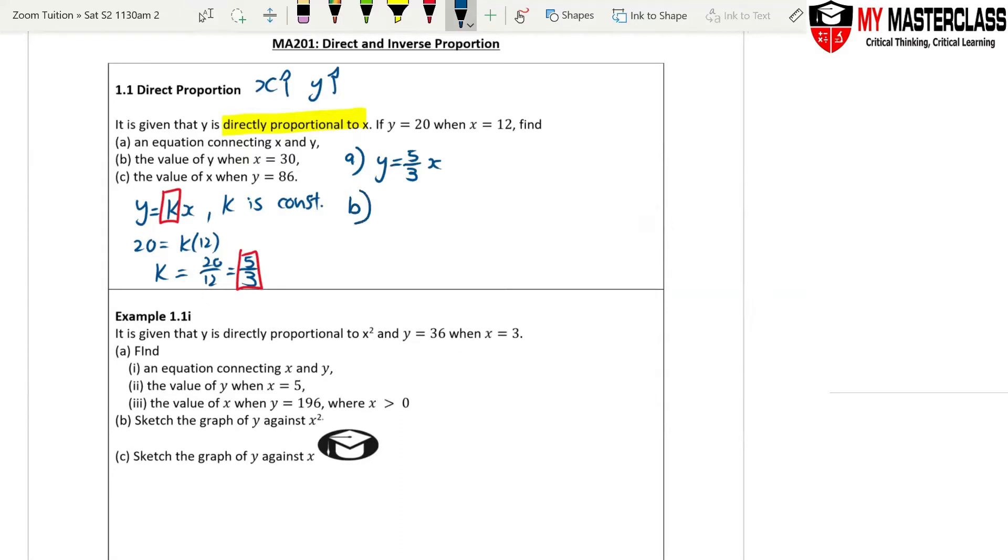For part b, find the value of y when x equals 30. So now you put in, when x equals 30, y equals 5 over 3 times 30. This equals 50.